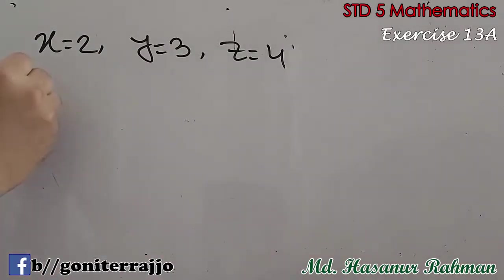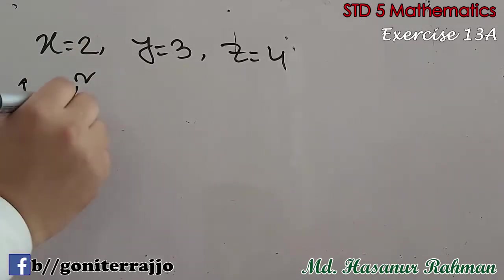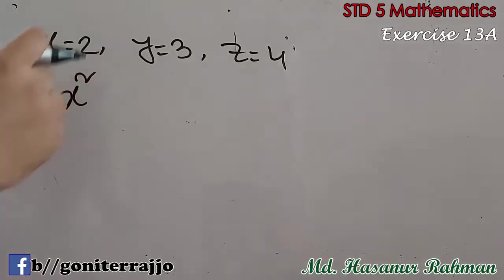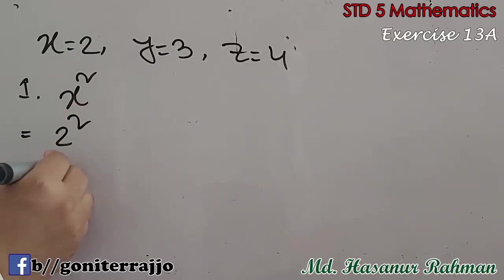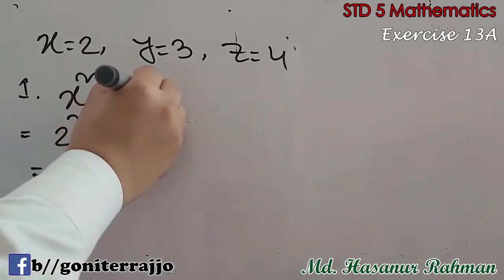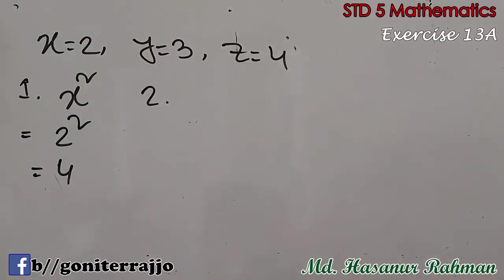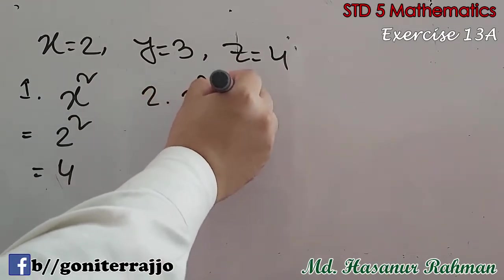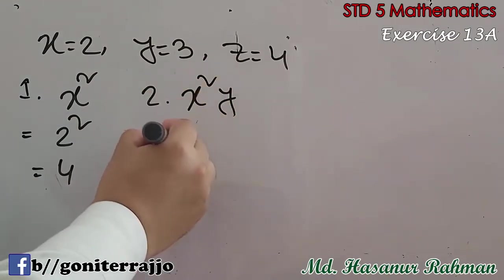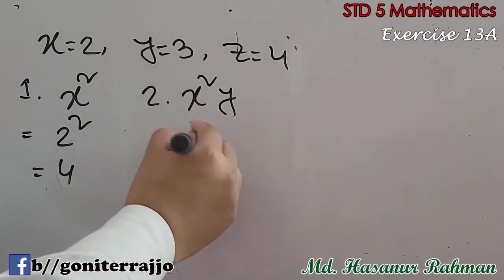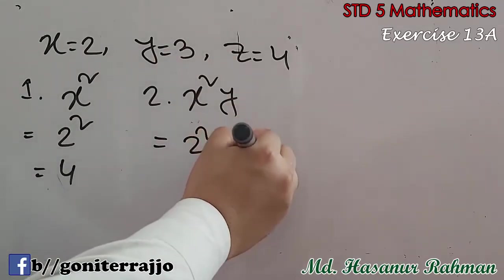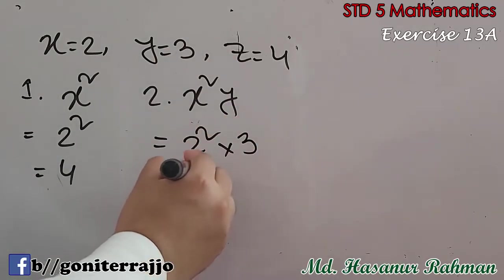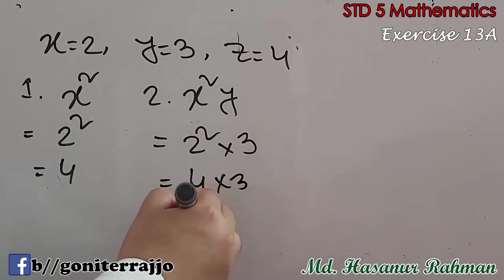Number 1: x squared. If I put the value of x, that is 2, so that will be 2 squared, which means 4. Now number 2: x squared y. Here x represents 2, so 2 squared into y means 3. So 2 squared means 4, into 3, that is 12.